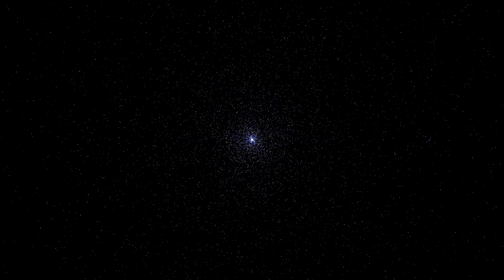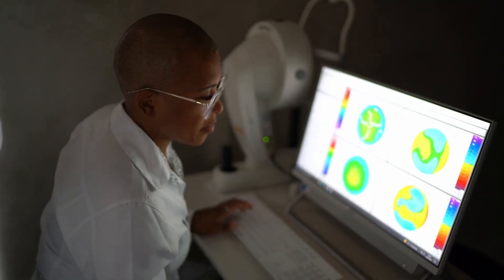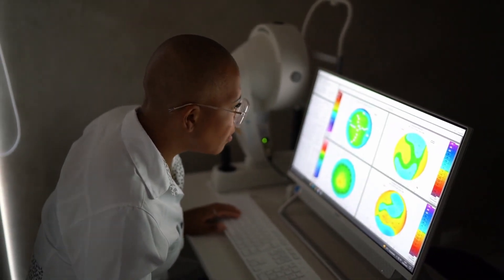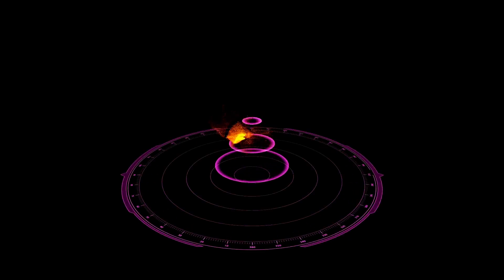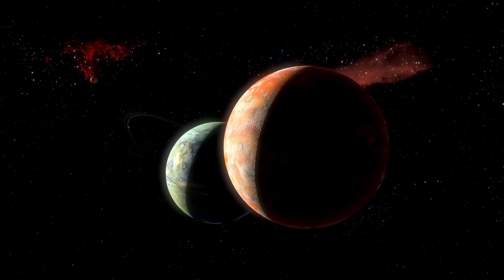Let's now consider Proxima Centauri, the star that Proxima Centauri b orbits. It belongs to the Alpha Centauri triple star system, which includes Alpha Centauri A and Alpha Centauri B. Together, this trio forms the closest known stellar grouping to our solar neighborhood.